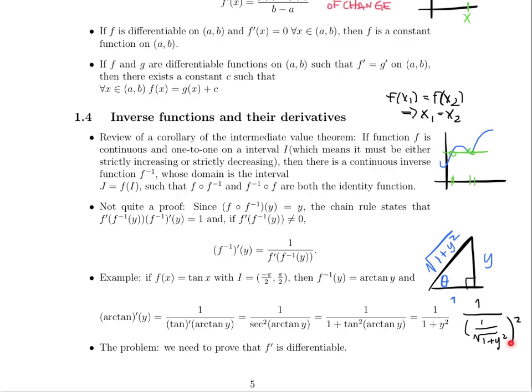Now all we have to do is algebraically simplify. Remember that this is secant squared. This when we simplify it is 1 plus y squared. And of course we want to take 1 over secant squared. So we end up with 1 over 1 plus y squared.